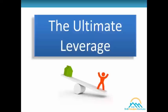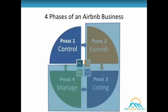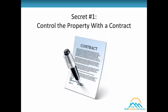Starting with secret number one, which begins with controlling the property. Write this down: the first step to making money with Airbnb is controlling a property. Before you can create a listing and rent a space, room, house, or timeshare on Airbnb, you have to control it. This is phase one of the Airbnb business cycle — without a property under your control, you have nothing to work with. So secret number one is: we control a property by using a contract.